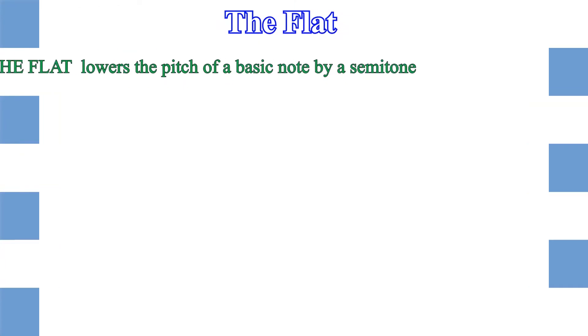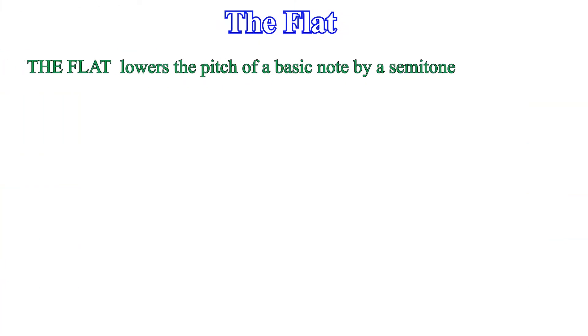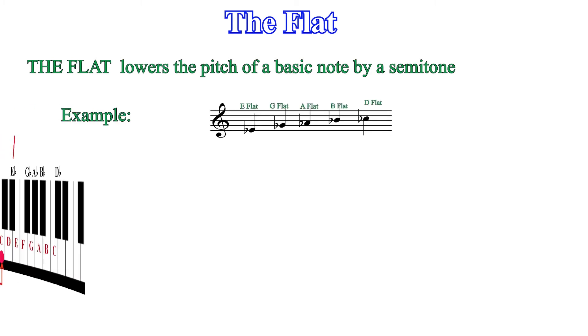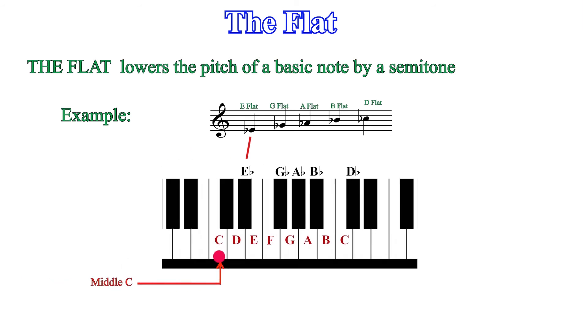The flat. The flat lowers the pitch of a basic note by a semitone. Since the pitch of a flattened note is lowered by a half tone, it means the pitch falls on the black note to the left of a white note that is flattened. This implies that the black note to the left of E becomes E flat as shown in the example. The sound of E is [demonstration], so the sound of E flat now will be [demonstration]. The pitch is lowered exactly by a semitone.